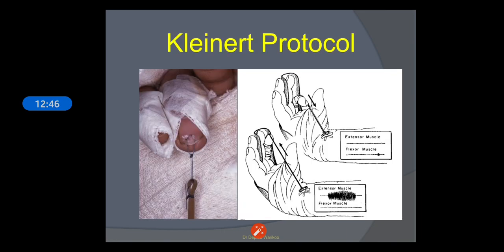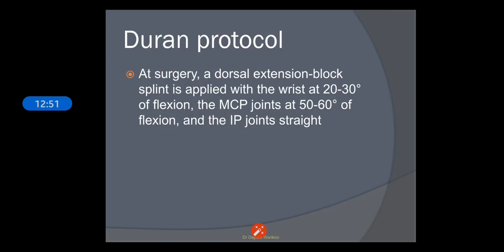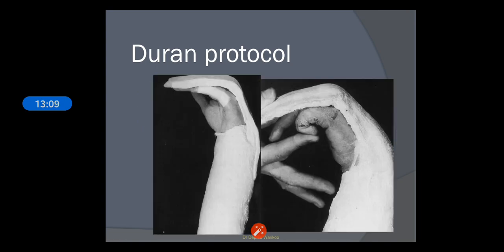In Duran's protocol, at surgery a dorsal extension block splint is applied which blocks extension. The wrist is placed at 20 to 30 degrees of flexion, MCP joints at 50 to 60 degrees of flexion, and IP joints are kept straight. This dorsal blocking splint is mainly used in Duran's protocol, modified Duran's protocol, and also in Cannon's protocol.